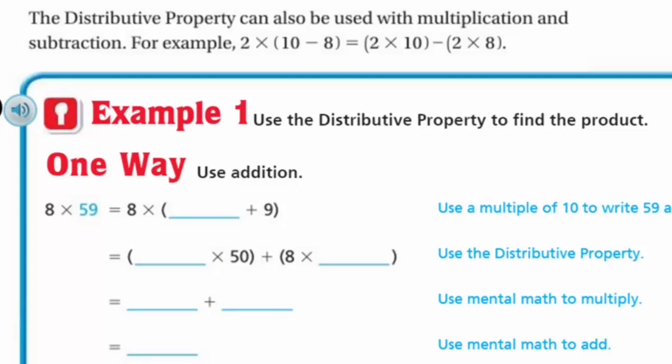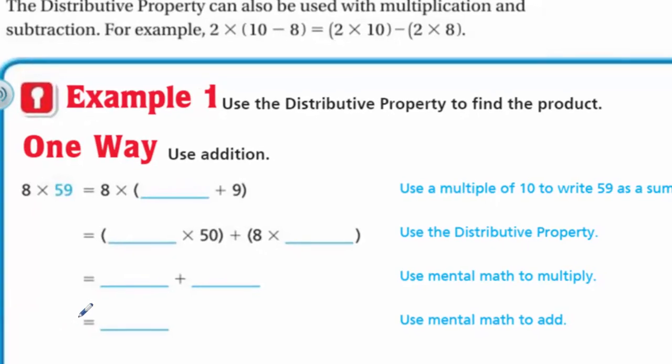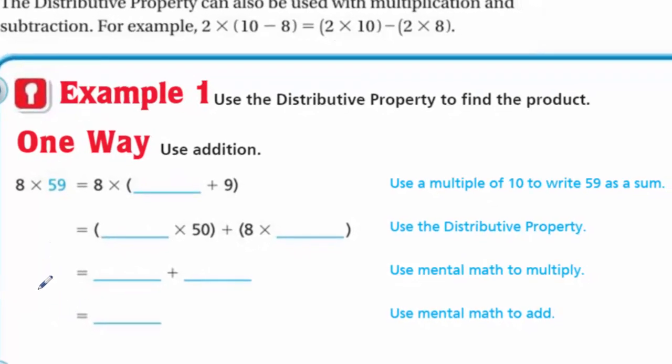It says the distributive property can also be used with multiplication and subtraction. For example, you can take 2 times, right, the difference of 10 and 8 is equal to 2 times 10. Well I should say the product of 2 and 10 minus the product of 2 and 8. That's how we say that. You get used to hearing that because later you're going to have to write numerical expressions and it's good that you understand the words connected with that. Okay, example one. Woo-hoo! Use the distributive property to find the product. Yes. Use addition. Oh this is so exciting. And they're giving us little helpful notes along the side.